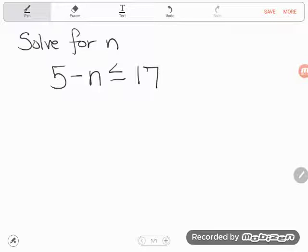So let's take a look. It says solve for n, and then I see the inequality 5 minus n is less than or equal to 17. That's what this little symbol here says, less than or equal to.